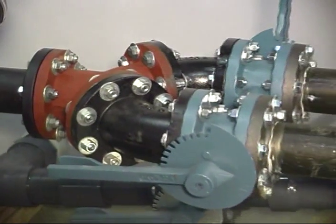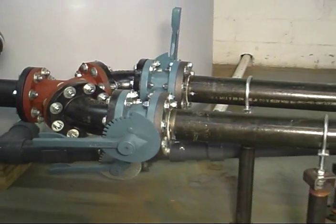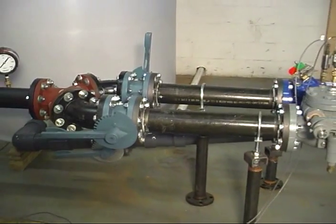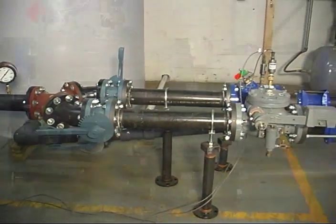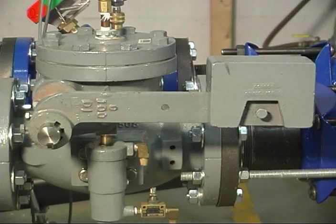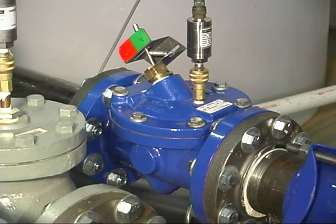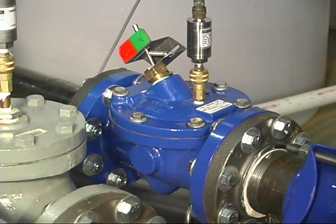Today we have the flow loop configured to do side-by-side check valve testing, dynamic testing, where we slam the check valves closed. We have a cushion swing check valve and a surge buster check valve side-by-side in the same kind of configuration.